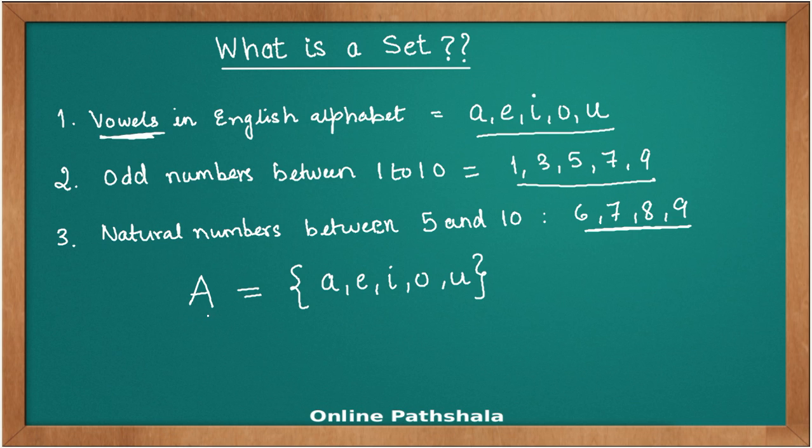You should read: set A comprises of elements a, e, i, o, and u. The rule is that they are all vowels in English alphabet. Similarly, if you want to represent the second collection of numbers, you would say that B equals 1, 3, 5, 7, and 9. This is another set, set B.